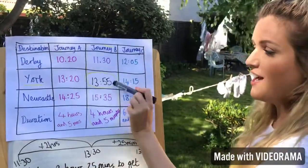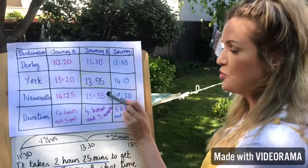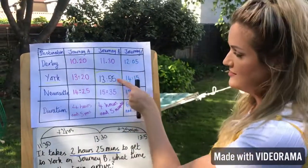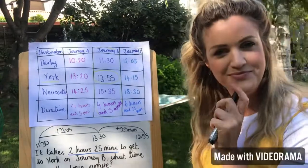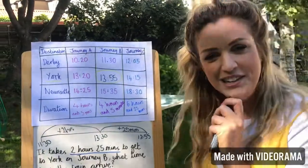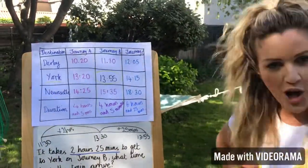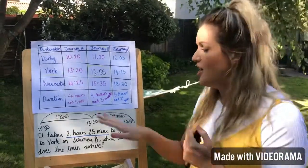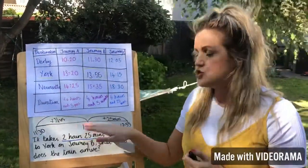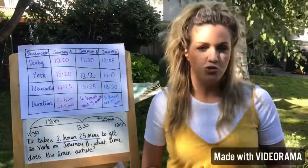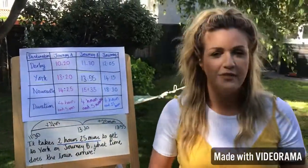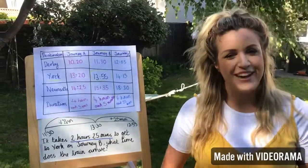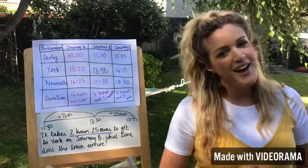I reckon the next question would probably be: how long does it take to get from York to Newcastle on Journey B? And you'd be able to do that now! So have a go at the learning for today, choose your challenge, and remember — timelines really do help, so don't be afraid to draw them. They're not babyish, they're really, really useful. Good luck, everyone!